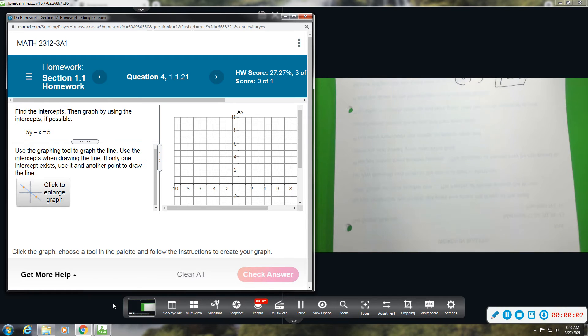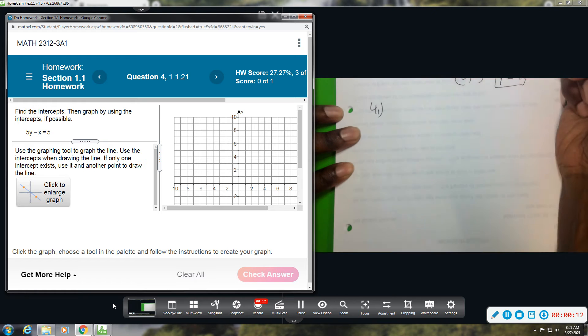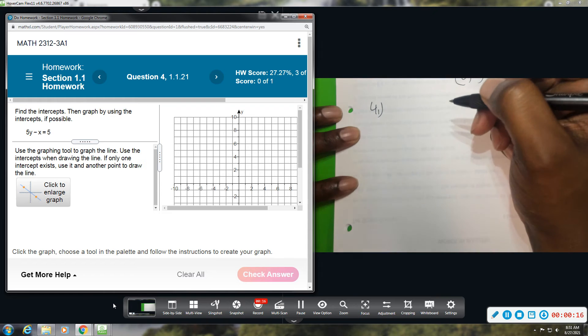Alright, question number four. Again, we're going to find the intercepts and then graph using the intercepts if possible. So what they want you to know here is sometimes you may not be able to graph with the intercepts, so we'll do something different. And when that comes up, we will show you.